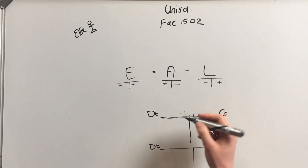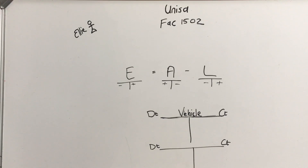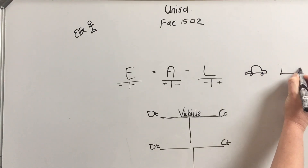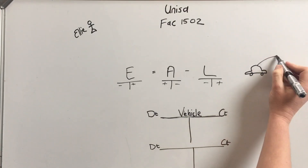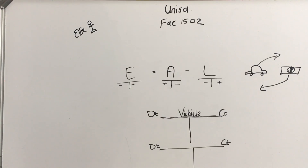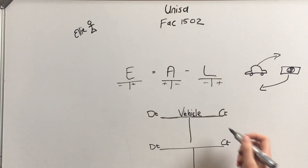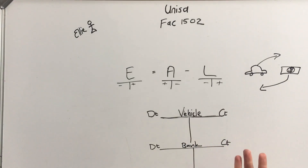An asset would be something like a vehicle. Let's say we are selling a vehicle. Two things happen: the vehicle goes away but there's cash coming into our bank account. So the two T-accounts — the two general ledger accounts — will be vehicle and bank. Debit is always left, credit is always right.